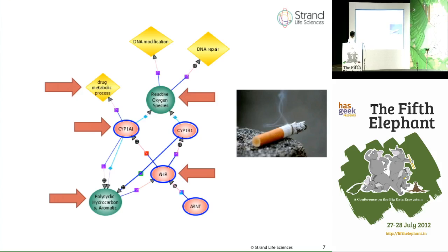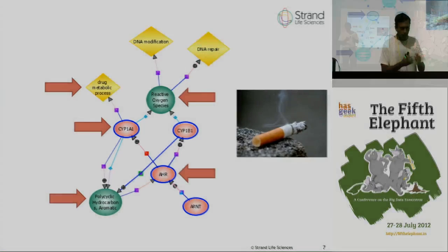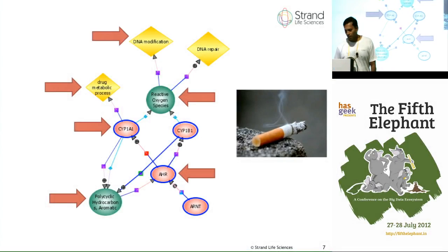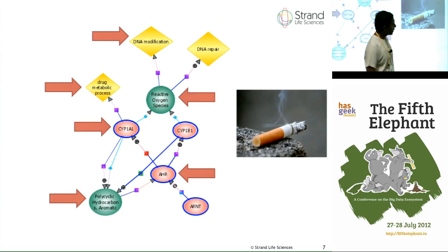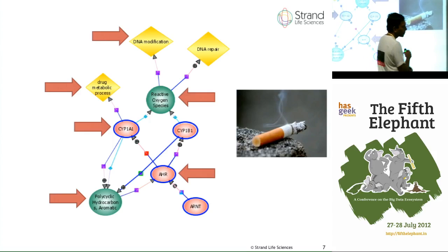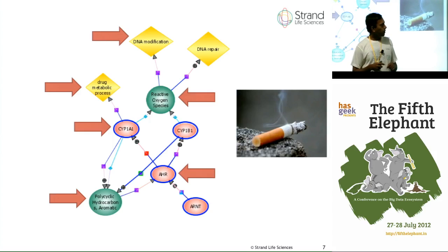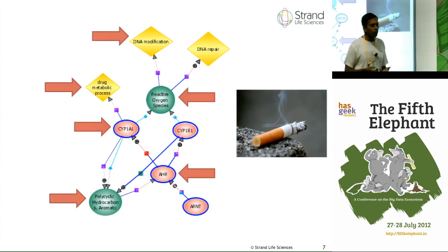What happens as a result of many drug metabolic processes — wherever invading molecules are being chopped up — is that things called reactive oxygen species are produced as a side effect. These have the unfortunate property of actually writing into the read-only program. They cause what is called DNA modification. This is an exception rather than the rule, like hitting a read-only memory with a hammer — the program does get modified in bits and pieces.